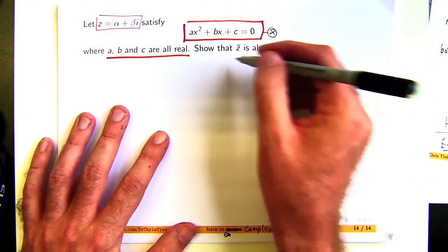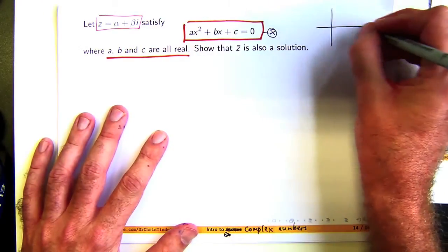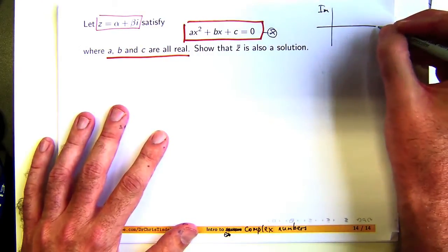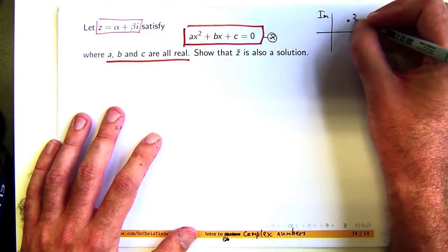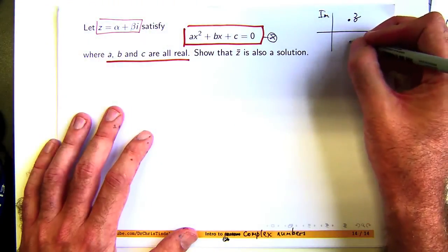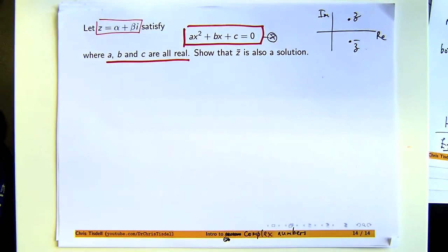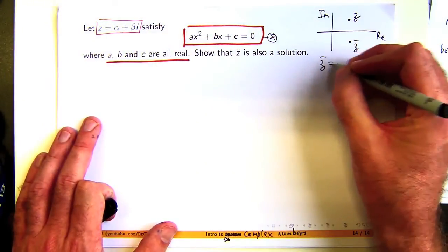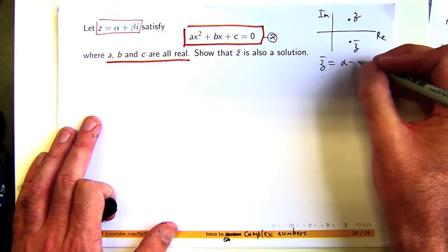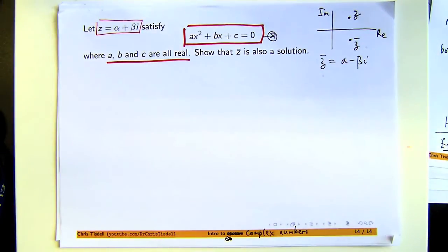Let me just remind ourselves of what this conjugate means. If I'm working in the complex plane and I have a complex number there, to get the conjugate you just reflect it in the real axis, the horizontal axis. And algebraically, if z is alpha plus beta i, then z bar would be alpha minus beta i. So you look at the coefficient of i and you change the sign on it.